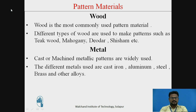The first material is Wood. Wood is the most commonly used pattern material. To obtain the best results, properly seasoned wood is used. Seasoning makes the wood strong, moisture-free, and smooth for machining. Using well-seasoned wood gives long service with minimum or negligible shrinkage. Different types of wood used to make patterns include teakwood, mahogany, deodar, sissam, etc.